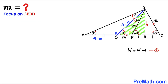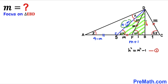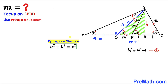Now let's focus on right triangle EBD. Side length EB is going to be the sum of these two individual lengths — M plus 1. The side lengths of this right triangle are 4 minus M, h, and M plus 1. We are going to apply the Pythagorean theorem: A² + B² = C². With A = M+1, B = h, and C = 4−M, we get (M+1)² + h² = (4−M)².